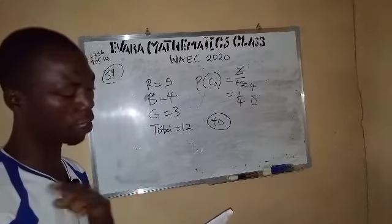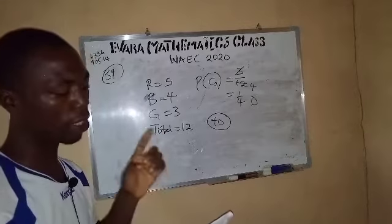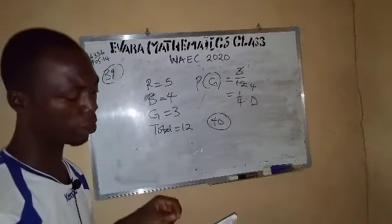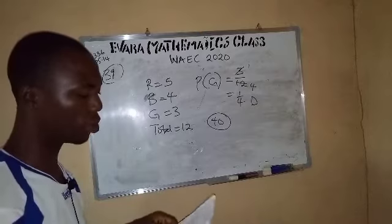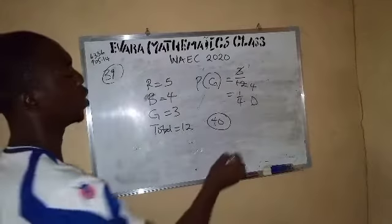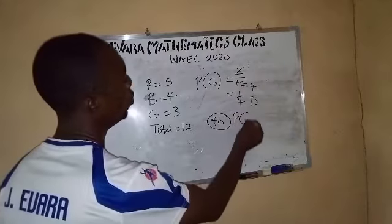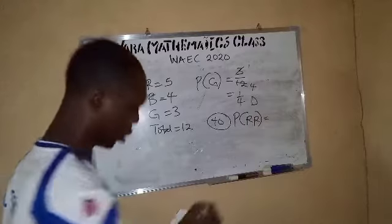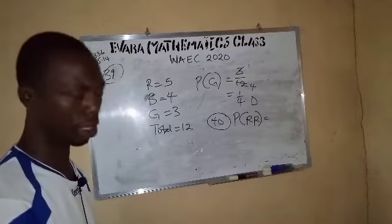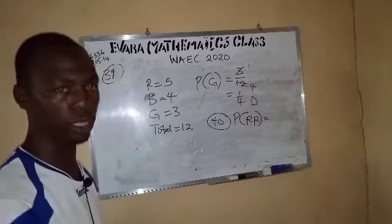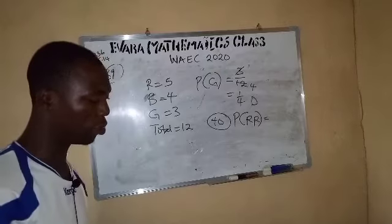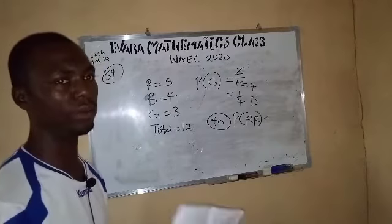So now we are asked to calculate the probability of picking two red balls. That is red and red, not red or red. Now, you know in probability and is multiplication.